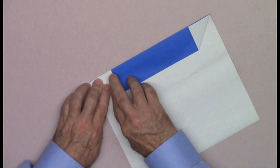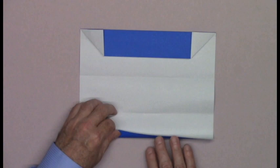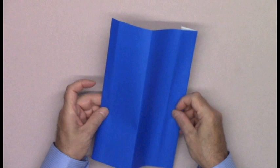Take the bottom edge to the center crease. Make only a pinch mark in the middle. Unfold. Fold the bottom edge to the pinch mark. Turn the paper over and fold in half, bottom edge to top.